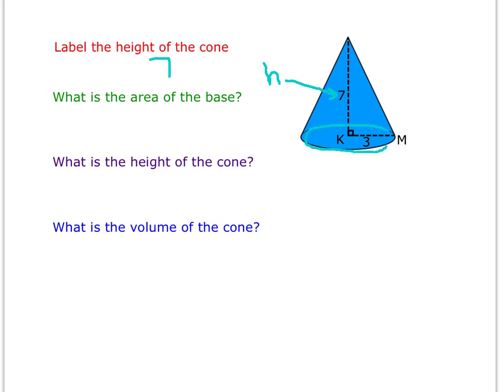And then the area of the base. Well, because a cone has a base that is a circle, we're going to do pi r squared. And in this circle, the radius is 3. So pi times 3 squared would be 9 pi. We said that the height of the cone is 7.